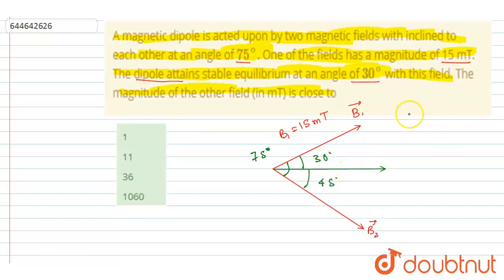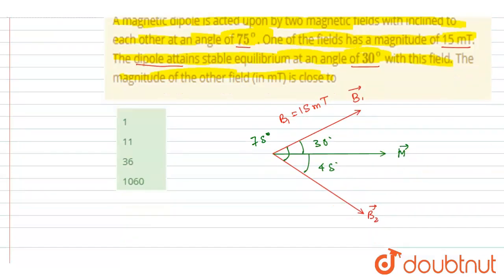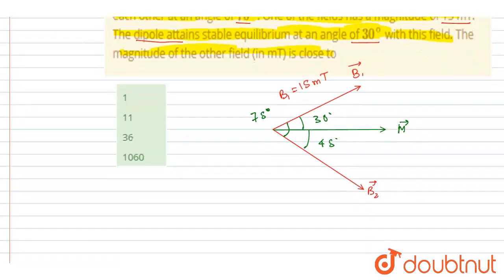We want the net torque to be zero. This is the magnetic moment. The torque because of the first, we know the torque because of the magnetic field will be m cross b. For the first case, m cross b is out of the plane. For the second, it is into the plane.